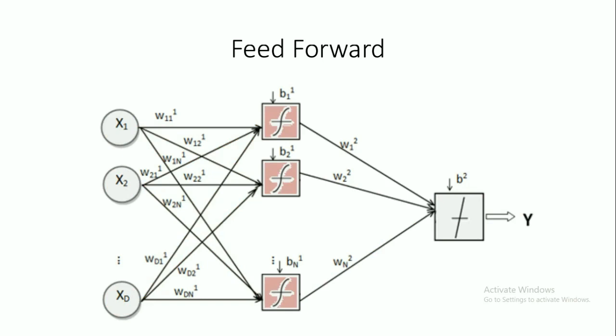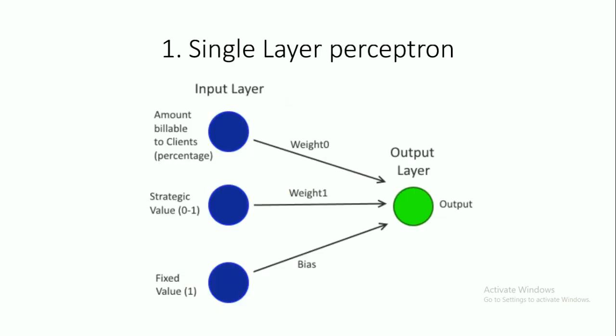Now, why is it called Feed Forward? Because in Feed Forward Neural Net, the flow of input or information is only in the forward direction, meaning there is no loop in this Neural Net. We will discuss Loop and Backward Propagation mechanisms in future videos. There are two types of Feed Forward Neural Nets.